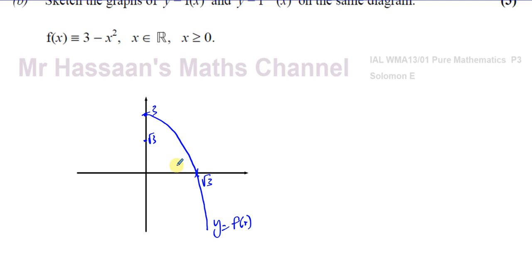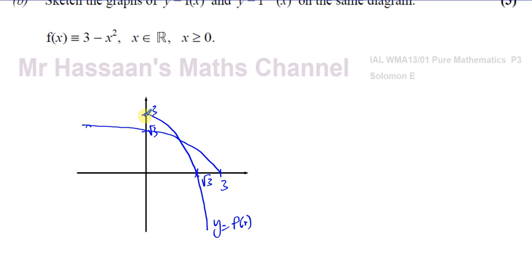So the inverse function's y-intercept is √3, and the y-intercept of the original (which is 3) becomes the x-intercept of the inverse. The domain of the original function is x ≥ 0, which becomes the range of the inverse. The range of the original function is y ≤ 3, which means the domain of the inverse function is x ≤ 3.